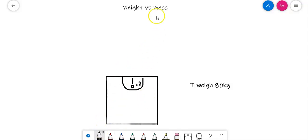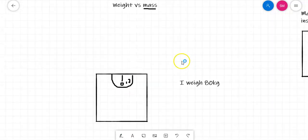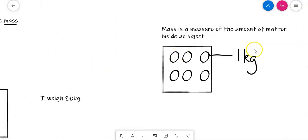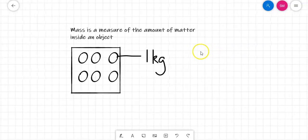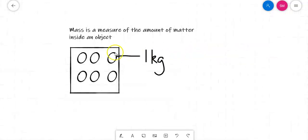To be able to talk about the difference between weight and mass, we'll need to start by describing what mass actually is. Mass is the measure of the amount of matter inside an object. If we had a box here that had six particles, each particle had a mass of one kilogram, the total amount of matter inside that object would be six kilograms. This box has a mass of six kilograms.